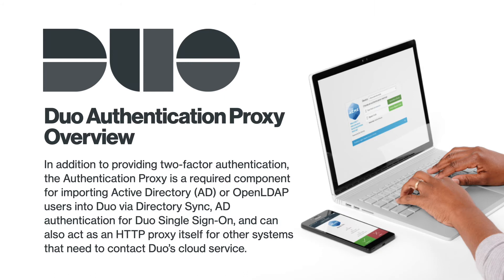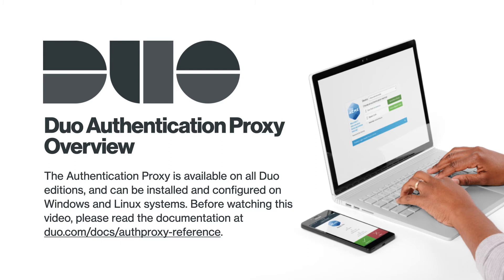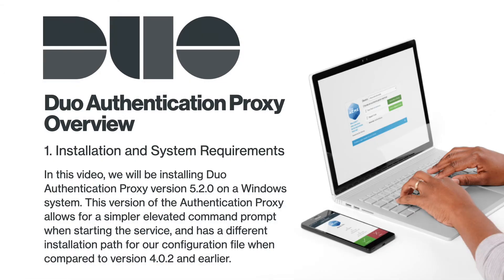In addition to providing two-factor authentication, the Duo Authentication Proxy is a required component for importing Active Directory or OpenLDAP users into Duo via Directory Sync, Active Directory Authentication for Duo Single Sign-On, and can also act as an HTTP proxy for other systems that need to contact Duo's cloud service. The Duo Authentication Proxy is available on all Duo editions and can be installed and configured on Windows and Linux systems. Before watching the video, please read the documentation at duo.com/docs/authproxy-reference. Let's begin with installation.